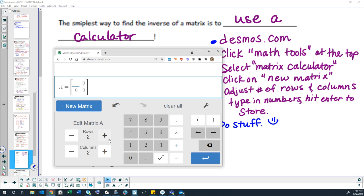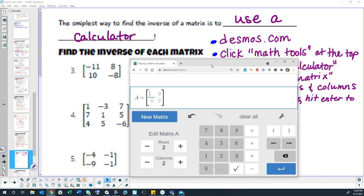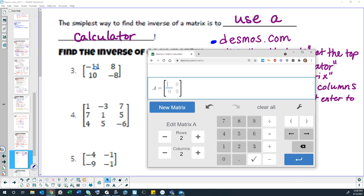Desmos automatically names my matrices with letters that it assigns. I don't think there's any way to change those letters. When we're done creating the matrix, it will allow us to use the letters assigned to each matrix to do operations with them. For the problem right here, problem 3, we want to find the inverse of this matrix: negative 11, 8, 10, negative 8. I'm going to type in those numbers: negative 11, 8, 10, negative 8.